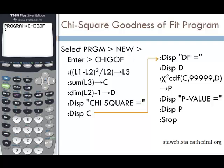The first step of the program takes our lists and subtracts them. We're going to put our observed values in L1 and our expected values in L2. This is essentially doing (O minus E) squared divided by E, and it will store the result in a different list. Open parenthesis twice, then L1 (SECOND 1), subtract L2 (SECOND 2), close parenthesis, squared, divided by L2, close parenthesis, store to L3 (SECOND 3).